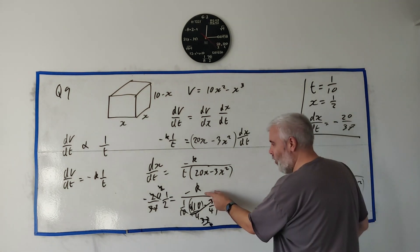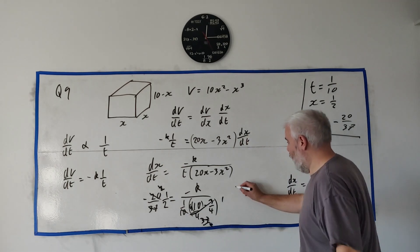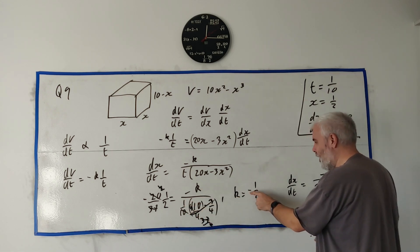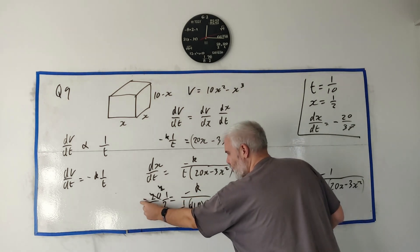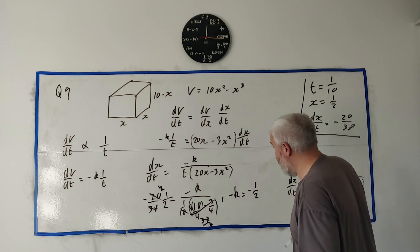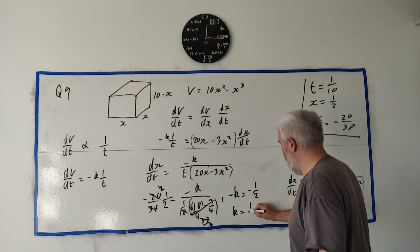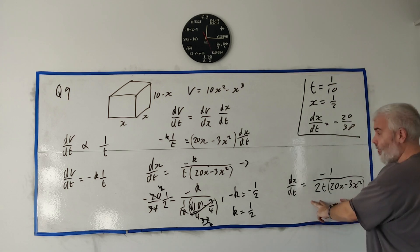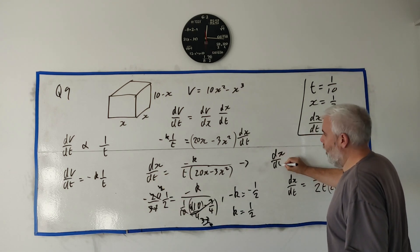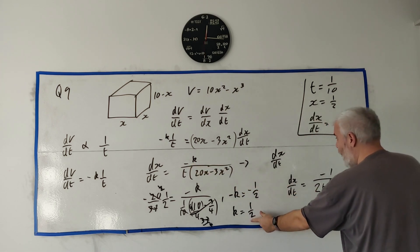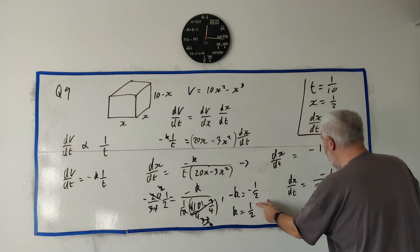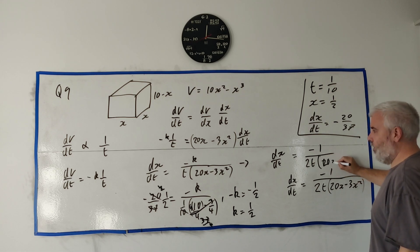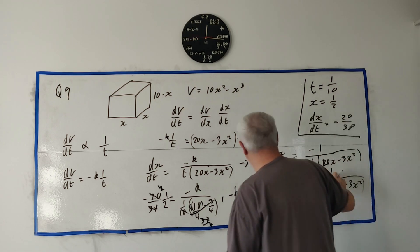So k = 1/2. Writing the final answer cleanly: dx/dt = −1 / [2t(20x − 3x²)], which is what we were looking for all along. The minus sign and the constant k = 1/2 combine to give that clean result.